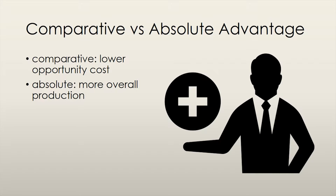Comparative advantage is defined as the ability of one producer to produce a good at a lower opportunity cost than another producer. Often this is associated with efficiency — if one producer has a comparative advantage compared to another, they can be said to be more efficient at producing the good. Absolute advantage, on the other hand, deals with overall productivity. If producer A can produce more of a good, regardless of their efficiency, than producer B, then producer A is said to have the absolute advantage in the production of that good.